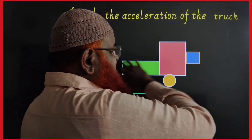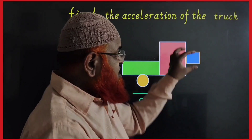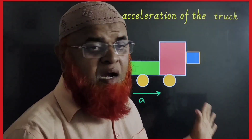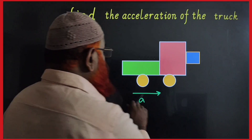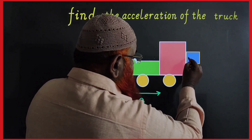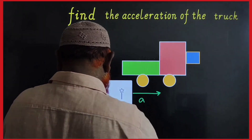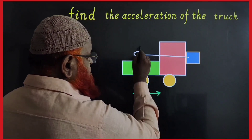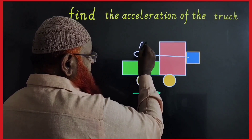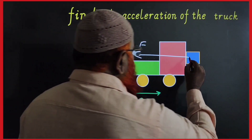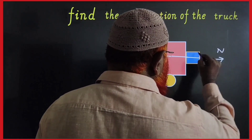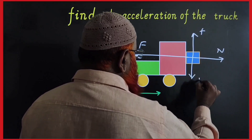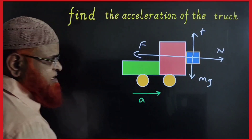Find the acceleration of a truck so that a block attached to the front part will not skid down. The acceleration of the truck acts like a pseudo force in the opposite direction. The pseudo force acts in the opposite direction, which is F. Normal reaction acts in the opposite direction. Friction acts upward. Mg acts downward.